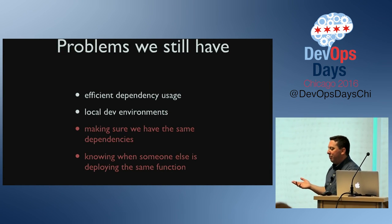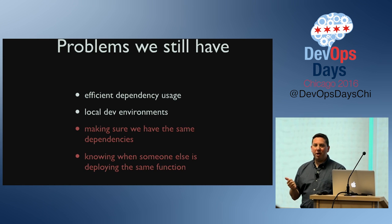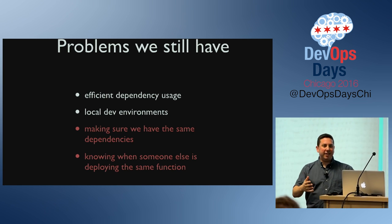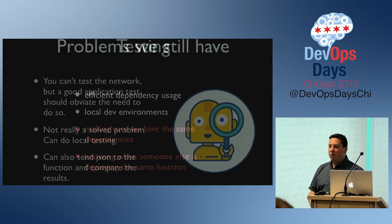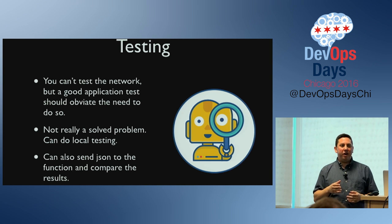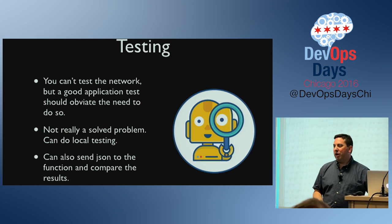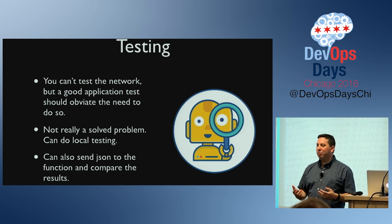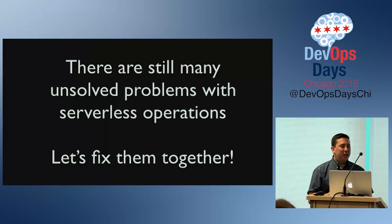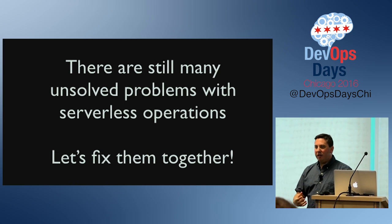That will at least solve the same-dependencies problem and knowing when someone else deploys, but efficient dependency usage is still a big unsolved problem. The local dev environments problem is also really big — you pretty much have to deploy it and test it in a dev account to see if it works. In a microservices environment, if you're doing a robust job, you're testing things like slow network and cutting off communication from one service to another. None of that you can do right now with Lambda or these other services — there's no way to say make this randomly fail 5% of the time and tell me what happens. A lot of these problems still don't have solutions, so hopefully as we work on them we can share them with each other.